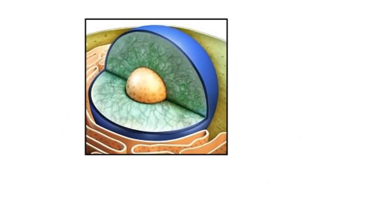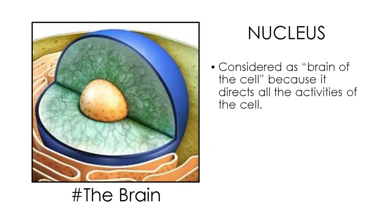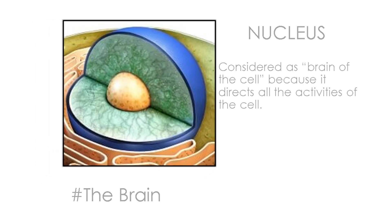The nucleus houses DNA, the hereditary material, as well as various proteins. The nucleus is the centermost circle inside the cell. It is considered the brain of the cell because it directs all the activities of the cell.